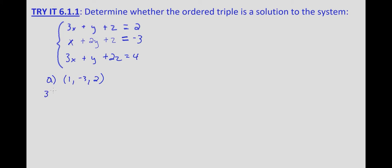We'll first substitute: 3 times 1 for x, plus negative 3, plus 2, and we want to know, does that equal 2? Well, that gives us 3 minus 3 plus 2 — does that equal 2? 3 minus 3 is 0, plus 2 equals 2, so 2 equals 2. This one checks.